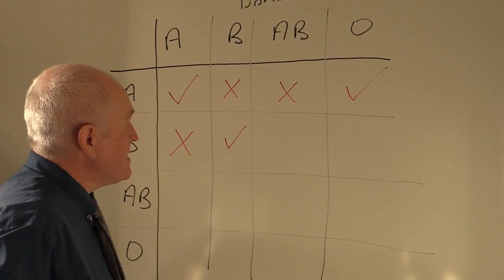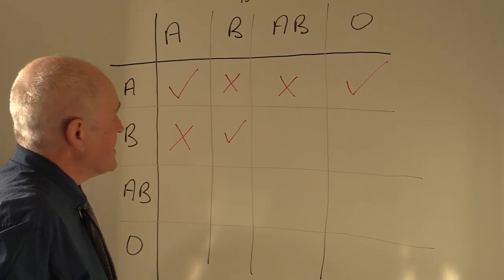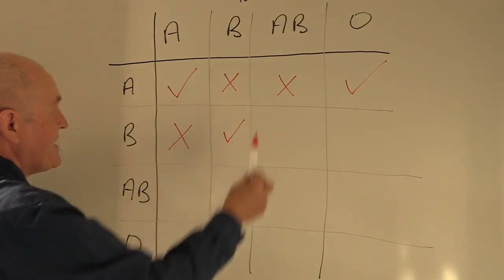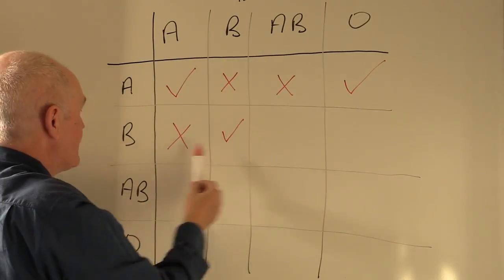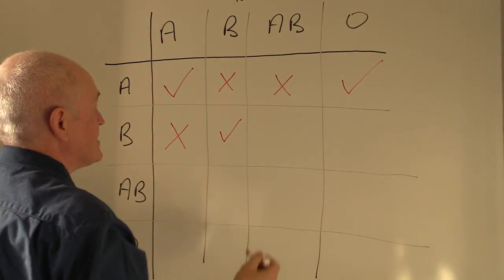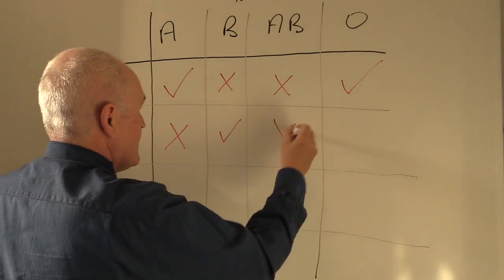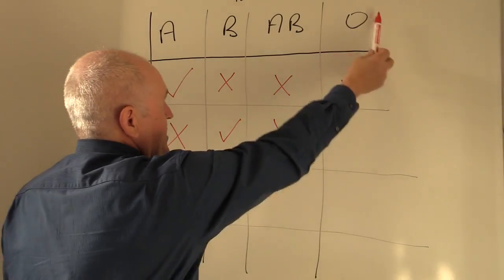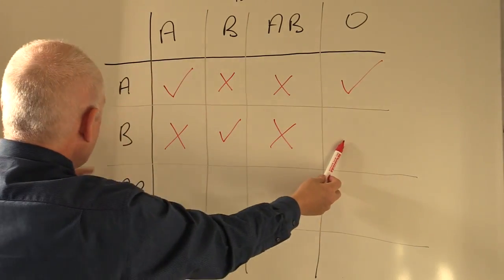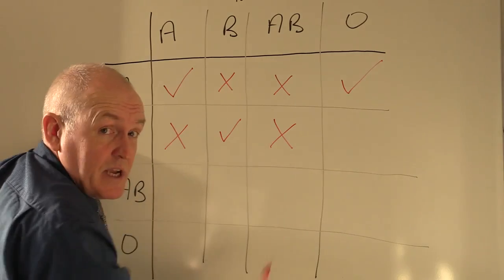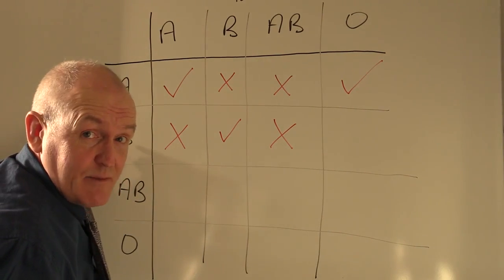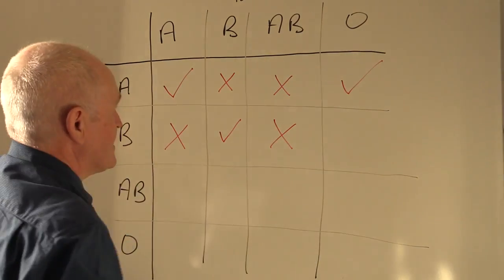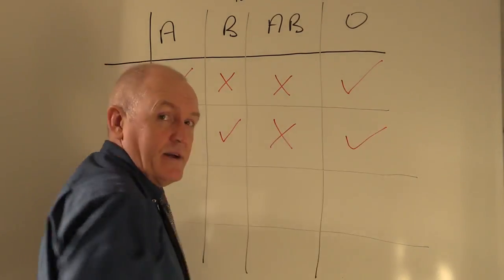AB to B — well, the A antigen will be agglutinated by the A antibodies in the recipient's plasma, so that one's no good either. O contains no antigens, so even although the recipient's group B blood contains anti-A antibodies in the plasma, in theory there is nothing to react with, so that would be acceptable.